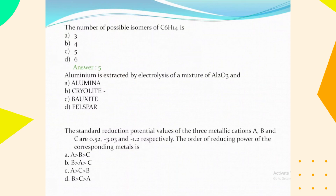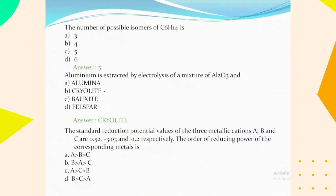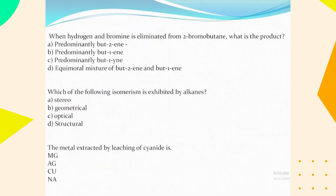The number of possible isomers of C₆H₁₄ is 5. Aluminium is extracted by electrolysis of a mixture of Al₂O₃ and cryolite. The standard reduction potential values of three metallic cations A, B, and C are +0.52, –3.03, and –1.2 respectively; the order of reducing power of the corresponding metals is B > C > A (option D). When hydrogen bromide is eliminated from 2-bromobutane, the product is predominantly but-2-ene.